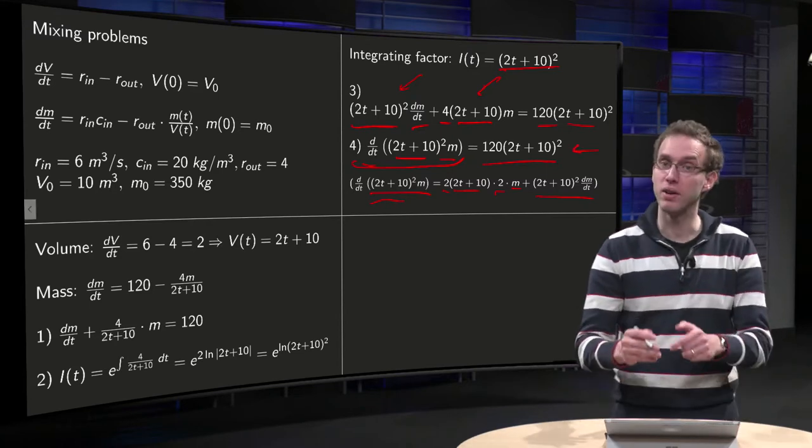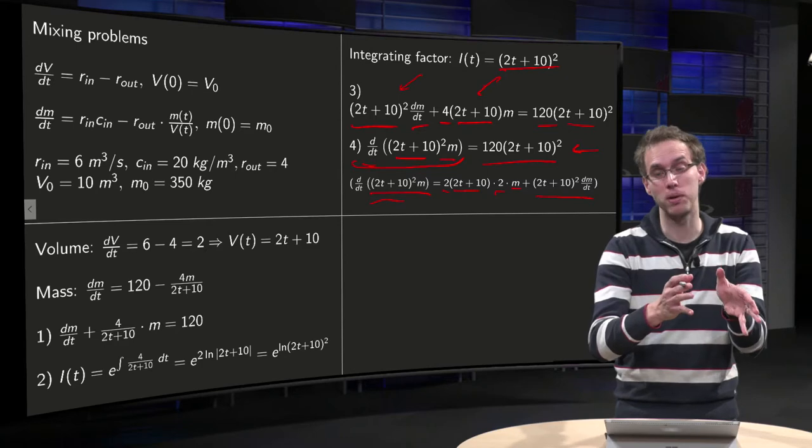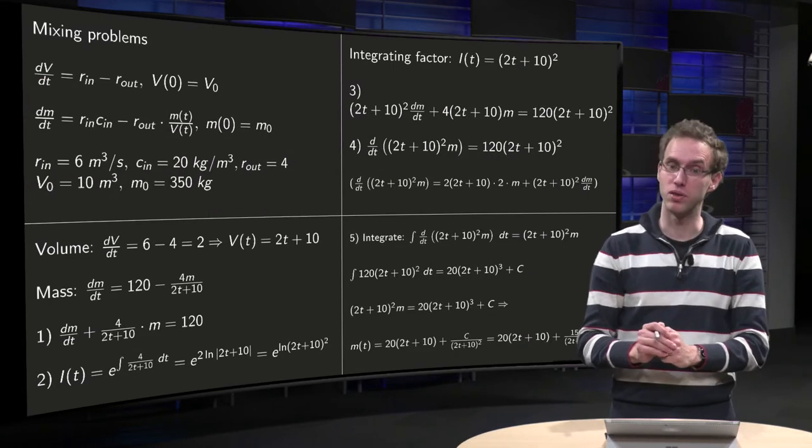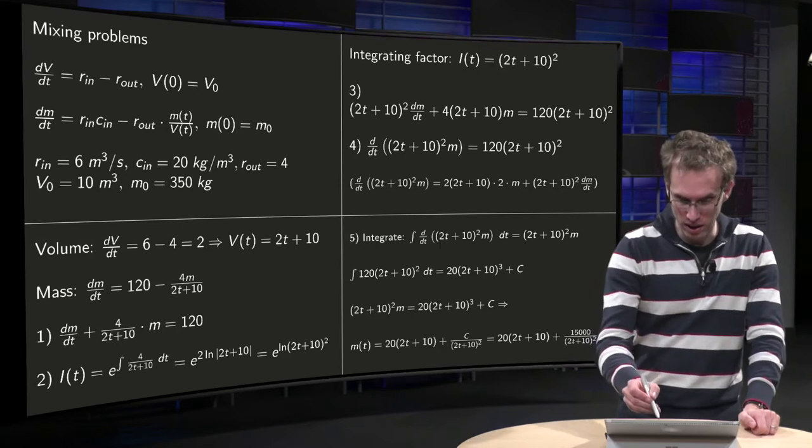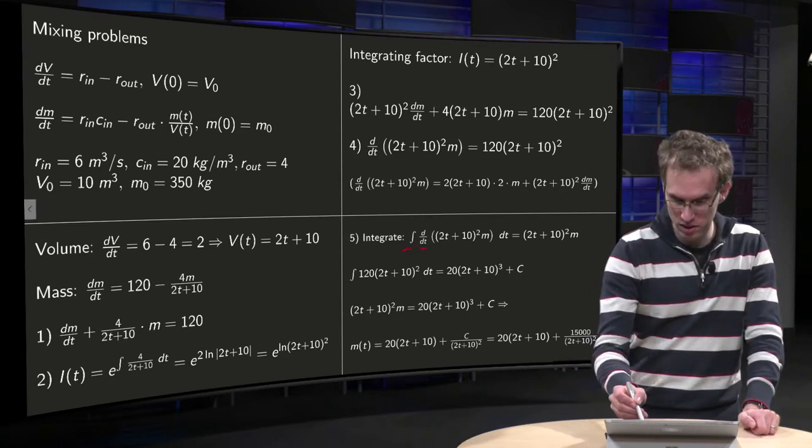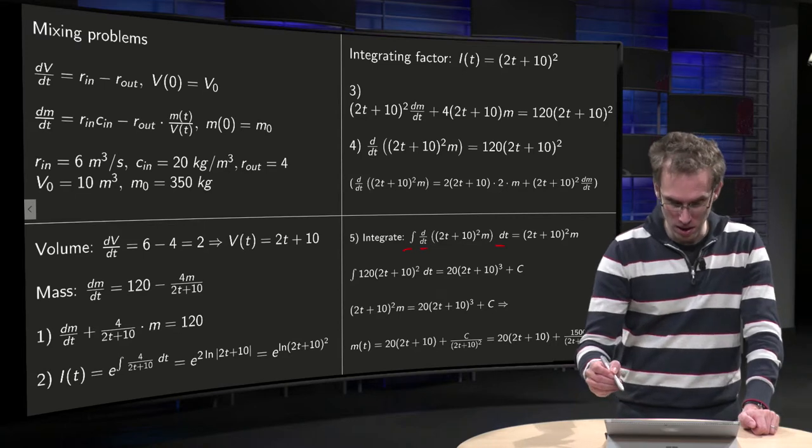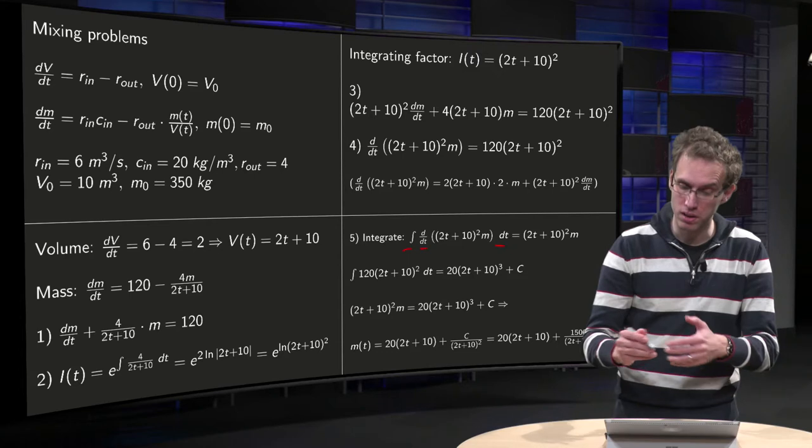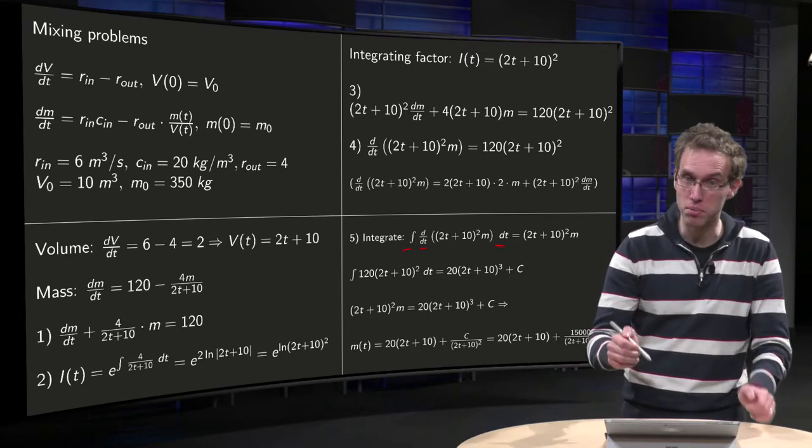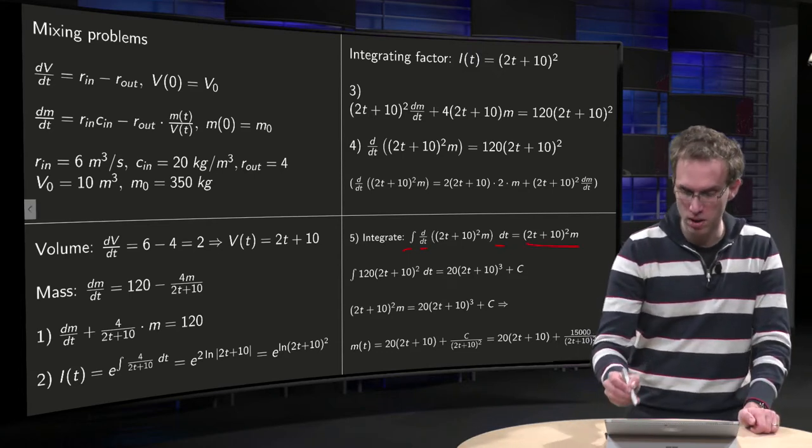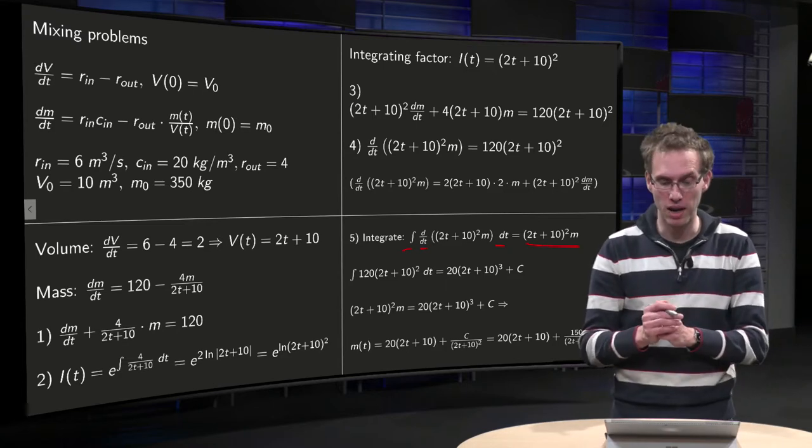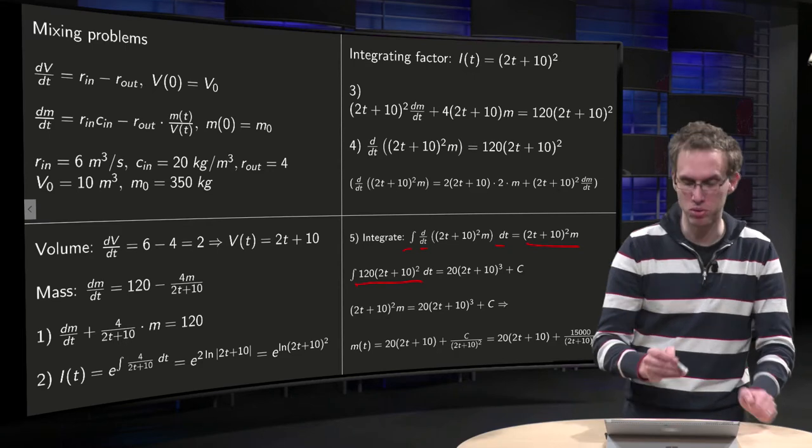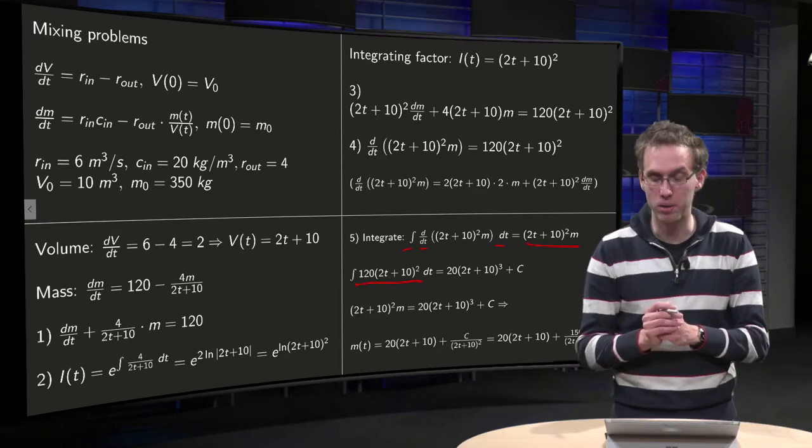We are over here. Now we can integrate the left hand side with respect to t, and we can integrate the right hand side with respect to t. That's what we do over here. So we integrate some d/dt with respect to t. And that's the left hand side. It's easy because the integral and the d/dt cancel out. So we get (2t + 10) squared times m.